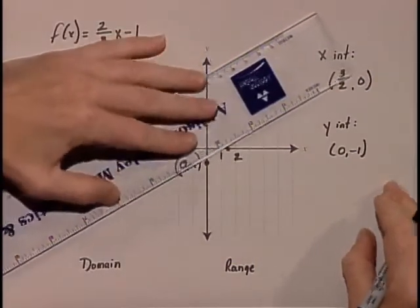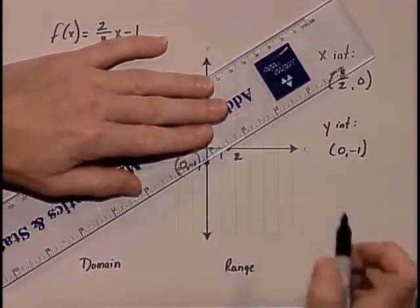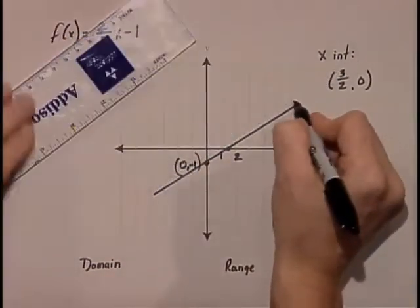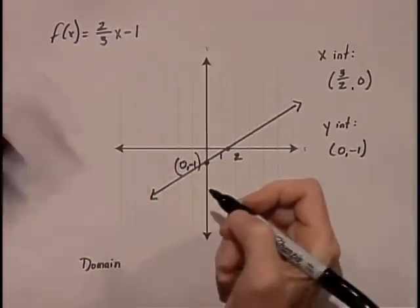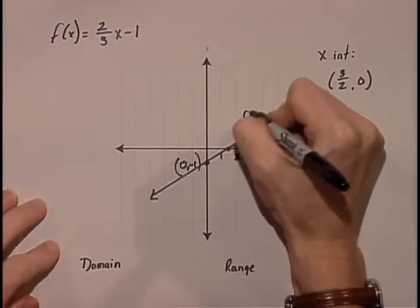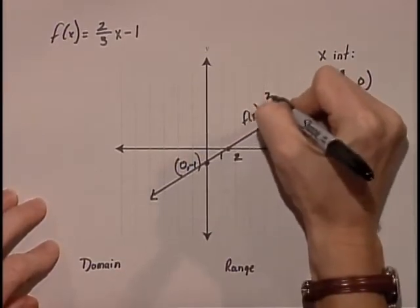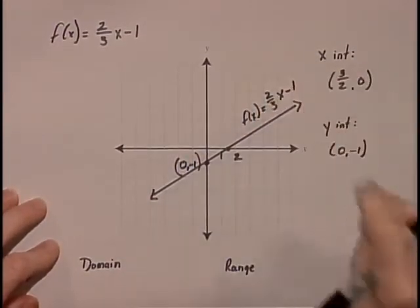We'll use a straight edge to connect our points and label it f(x) = (2/3)x - 1.